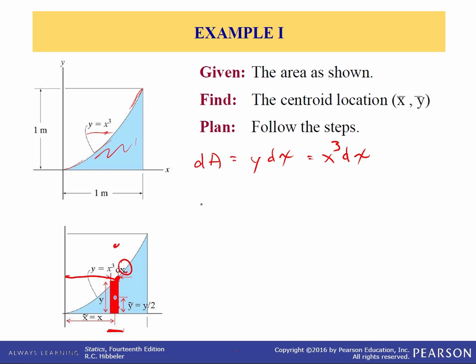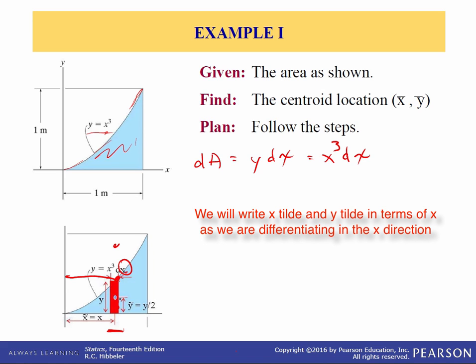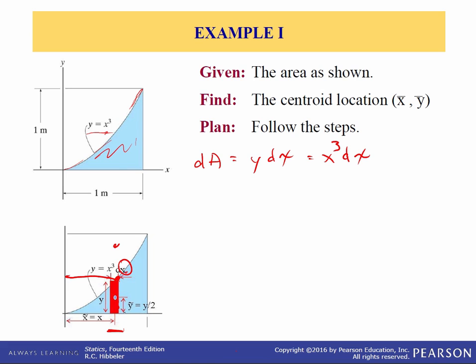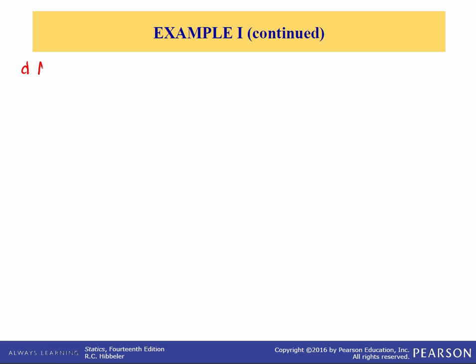The next step is to write x-tilde and y-tilde in terms of x and y respectively. x-tilde is the distance to the differentiating element center, so x-tilde equals x in this case. For y-tilde, the center of that rectangular element is at y over 2, so y-tilde equals y over 2. Since y equals x cubed, this is equal to x cubed over 2. So: dA equals x cubed dx, x-tilde equals x, and y-tilde equals x cubed over 2.